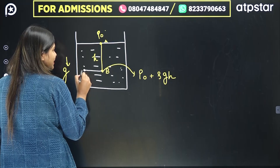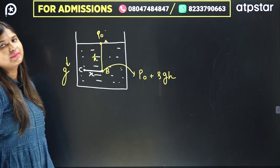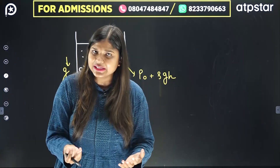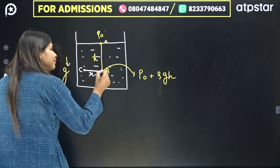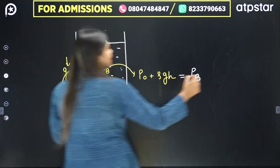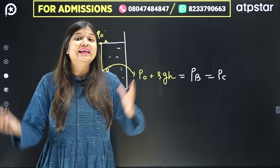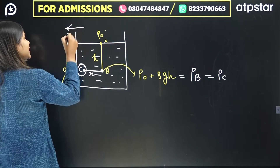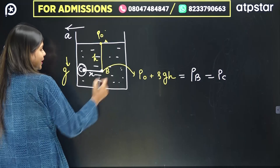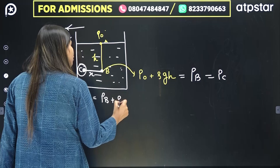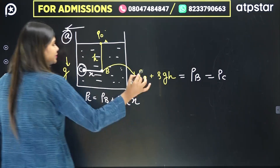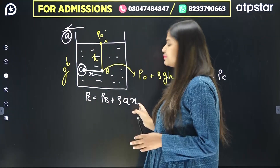Now if I have point C at horizontal distance x from another point, there is no force in the horizontal direction, no acceleration. So the pressure at C equals the pressure at B. But if there is an acceleration in the horizontal direction, then we write the pressure variation as: pressure at C = P_B + ρ × a × x, where there is no g because there is no gravitational acceleration horizontally.